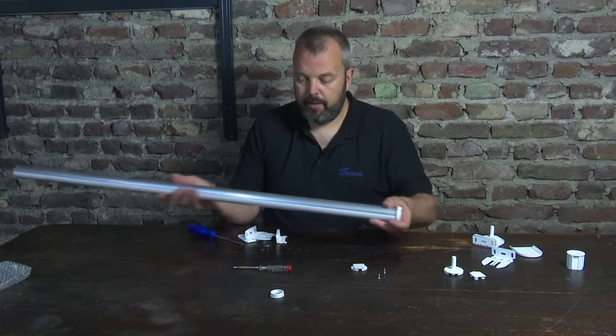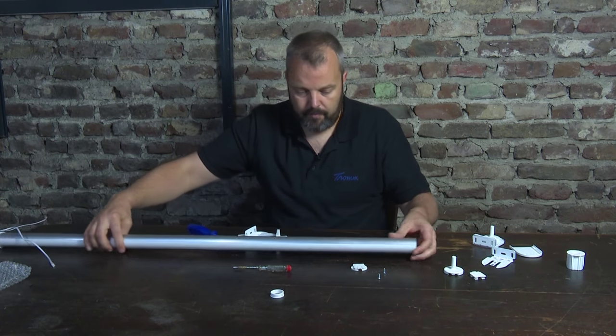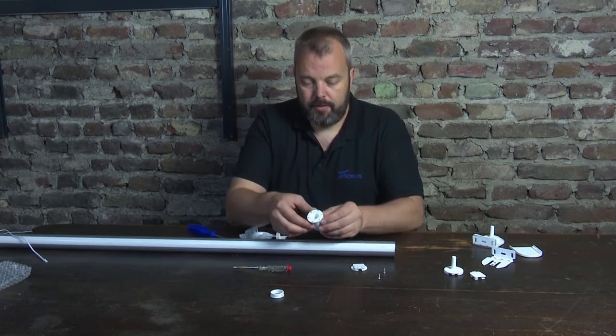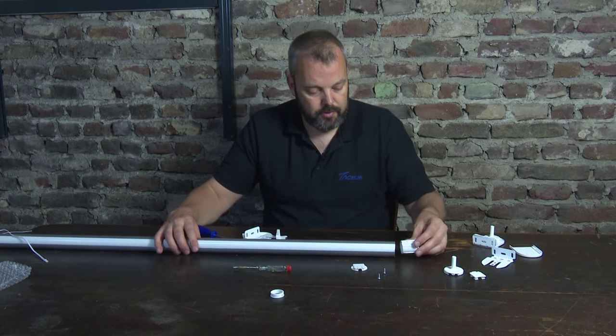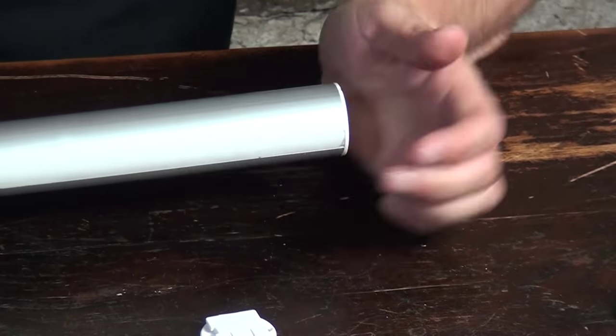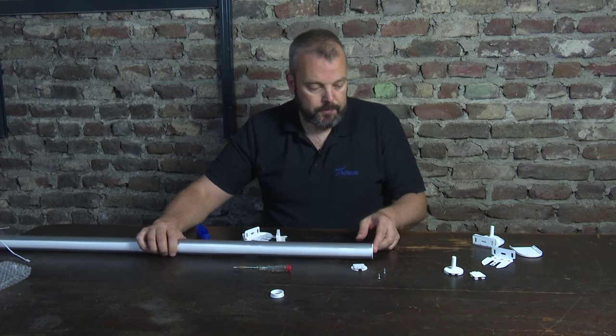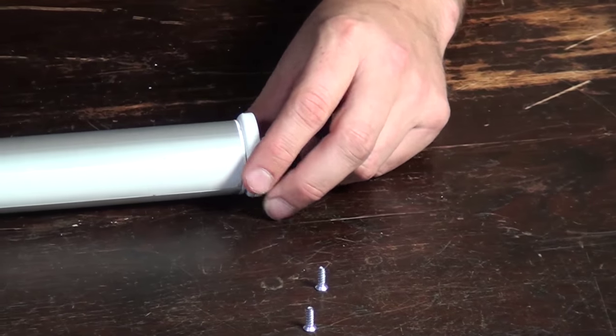So then we still have the other side where there's no motor. And we need this ring here, this white ring which will go into the tube like so. Press it firmly so that it's completely in place. And this part will later slide into this part here.